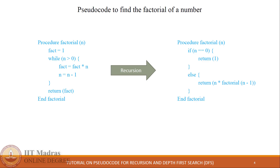For any number higher than 0, the else block will execute, which will return n multiplied by factorial of n minus 1. This call to factorial of n minus 1 will call the same procedure again with the updated value of n, which is n minus 1.